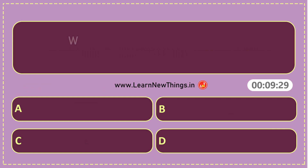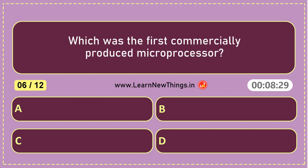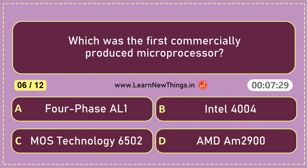Which was the first commercially produced microprocessor? Intel 4004.